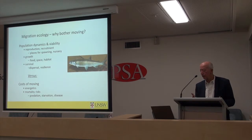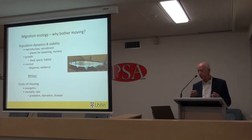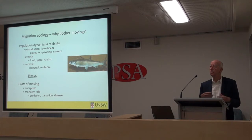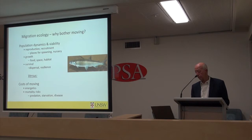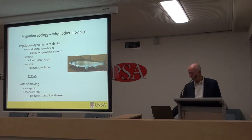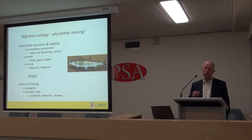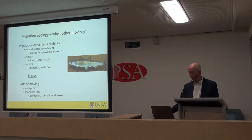So there are those three broad kinds of advantages in migration for fish, but there are also costs. The costs of moving include energetics — it takes a lot of energy to jump up waterfalls or swim powerfully for hundreds of kilometres. There are also mortality risks of predation, starvation and disease in populations that get excessively concentrated. But the fact that so many fish have evolved migratory behaviour means that the costs of moving are less than the benefits of doing so.